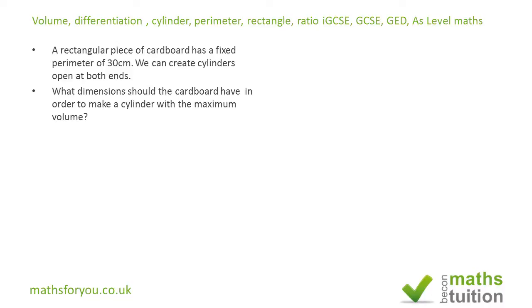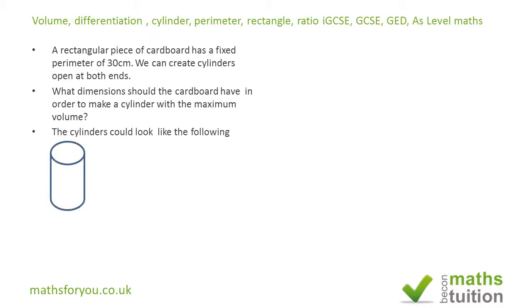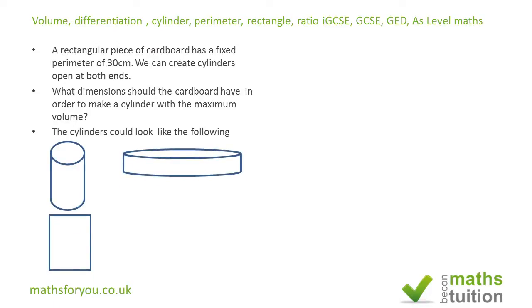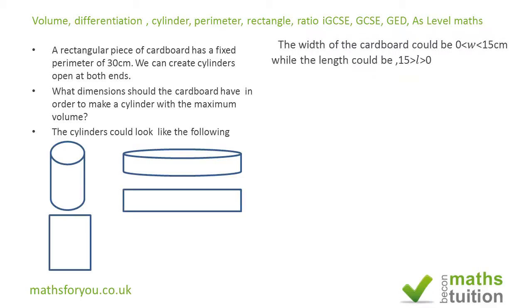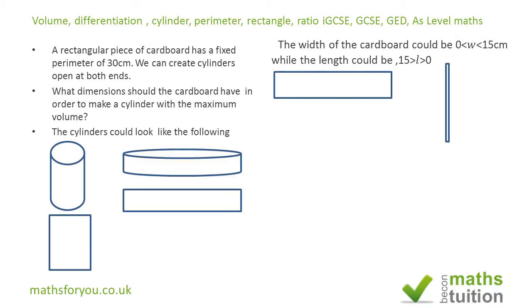What dimensions should the cardboard have in order to make a cylinder with the maximum volume? We're not actually bothered by the size of the cylinder itself or the size of the cardboard, as long as the perimeter is 30 centimeters. In effect, the width of the cardboard has to be between 0 and 15, and so does the length.